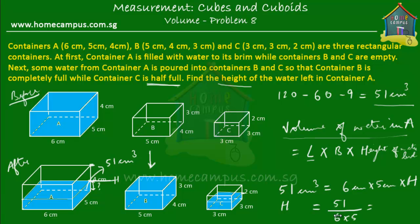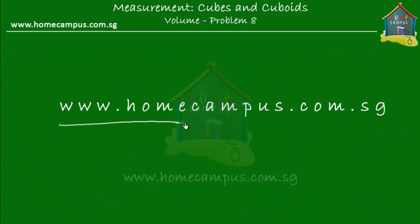51 divided by 6 divided by 5: dividing 51 and 6 both by 3 gives 17 over 2, and 2 times 5 is 10, so we get 17 divided by 10, which is 1.7 centimeters. The height of water left in container A is equal to 1.7 centimeters — and that's the answer to this word problem. I hope you got what I taught, and I hope you go and practice some problems or take some tests at www.homecampus.com.sg. Bye-bye.